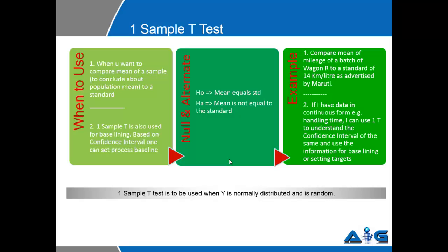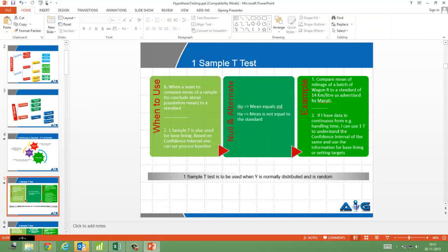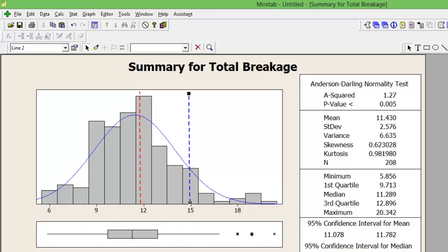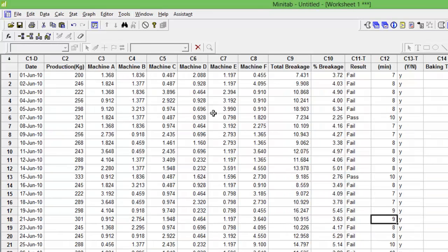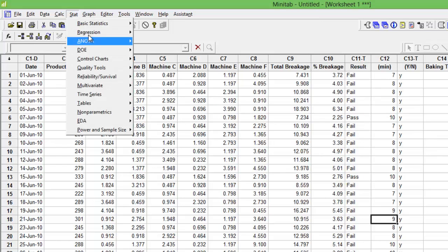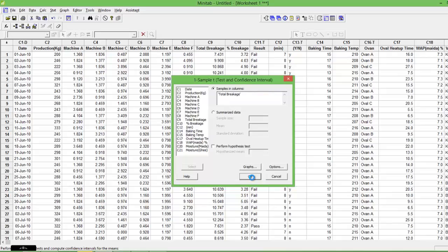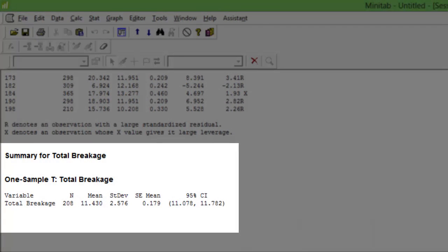But technically speaking, what a one sample t-test will do is create for itself... stats, basic stats, one sample t-test. I am looking at total breakage, I press OK. Let me not give it a target at all. So in the backdrop, technically speaking, what it is doing is creating a confidence interval of the population estimate.